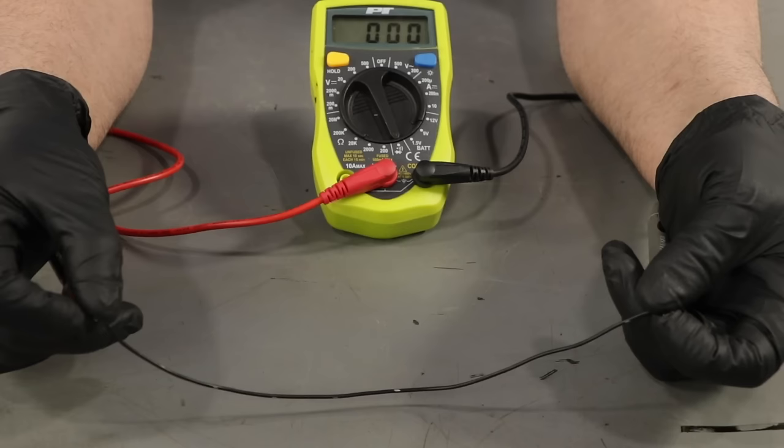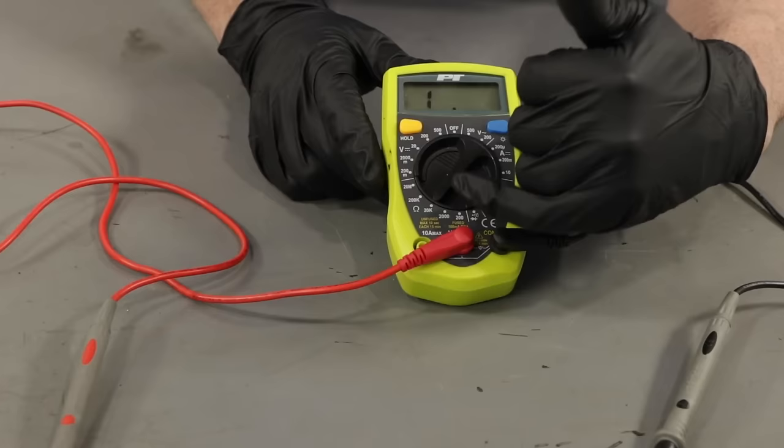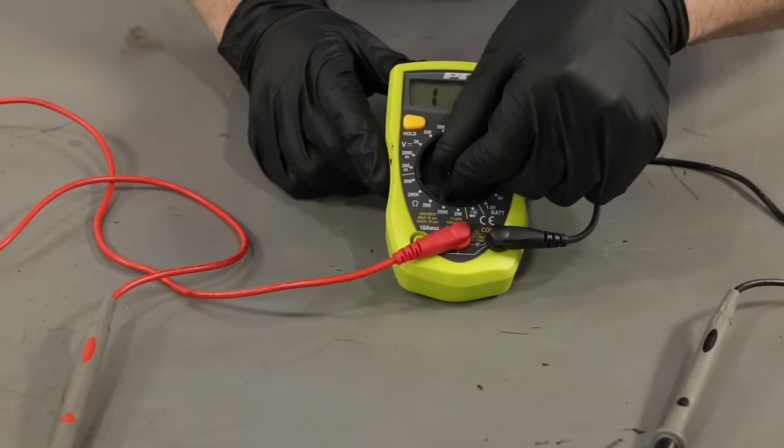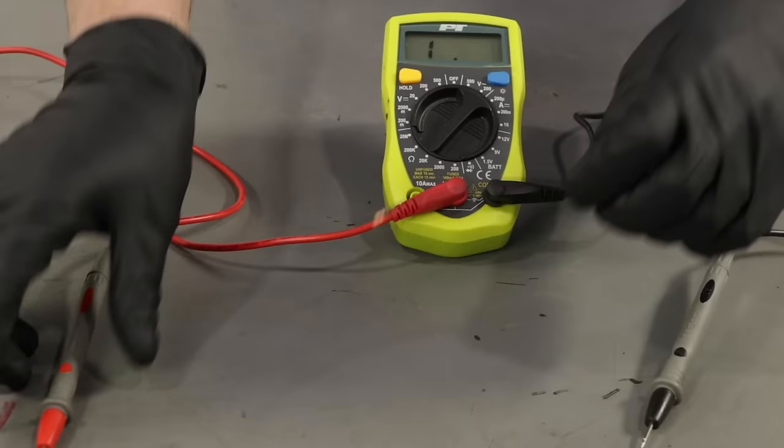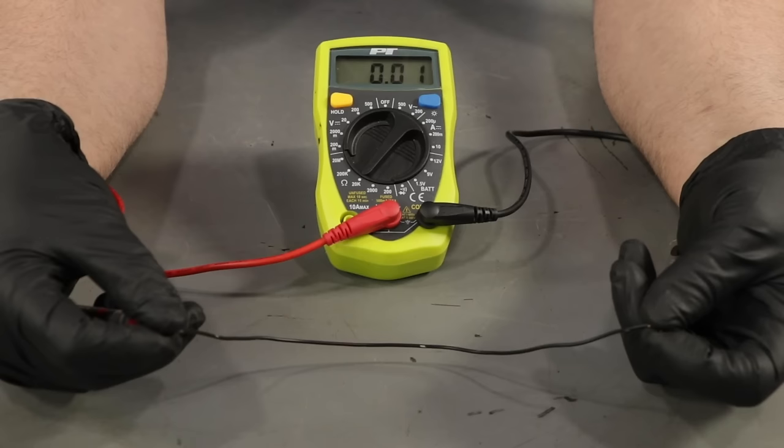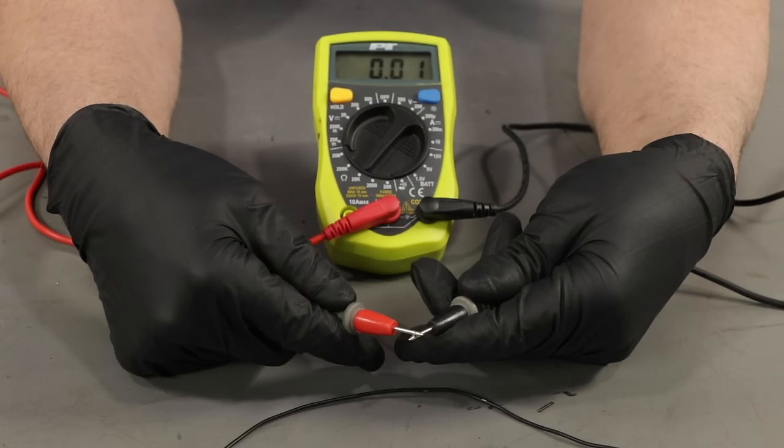Now we're going to check the resistance. If you go to the 20K, that's kind of the middle point. Like I said before, when you move these, it's just going to move the decimal point. So start at 20K. You can check the resistance of this wire. Very close to zero. It's 0.01. If you check the wires themselves, the leads, test leads are 0.01. So that's pretty good.